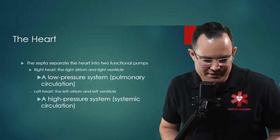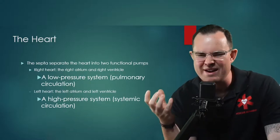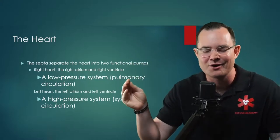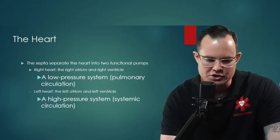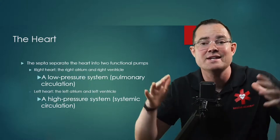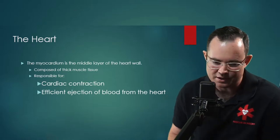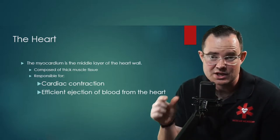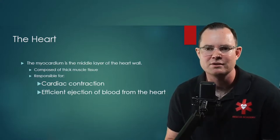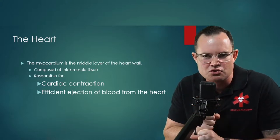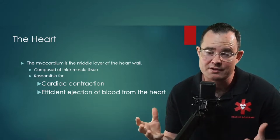The right heart — right atrium and right ventricle — is a low-pressured system known as pulmonary circulation. The right ventricle pushes blood into the pulmonary artery, distributed through the lungs. The left side — left atrium and left ventricle — is the high-pressured system due to having to feed systemic circulation. One important part is the myocardium, the middle layer of the heart wall. This thick muscular tissue is built for contractions — just like the middle layer of your blood vessels is built to dilate and constrict.